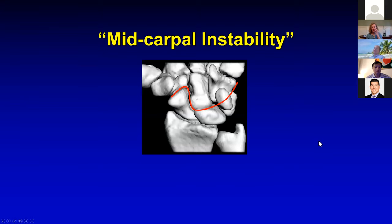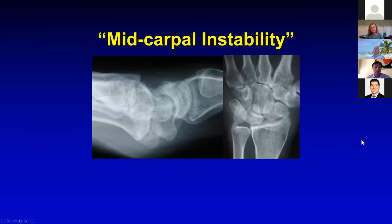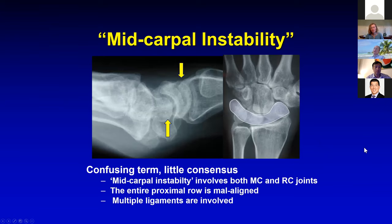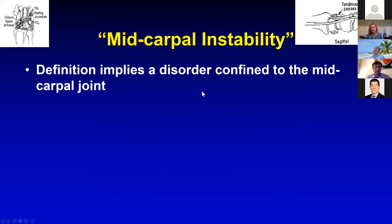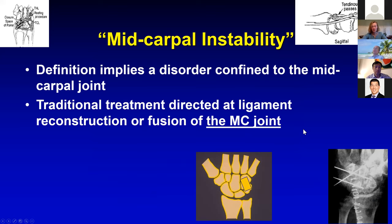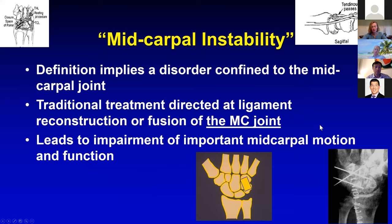Mid-carpal instability should refer only to a problem at the mid-carpal joint. Instead, it's a confusing term with little consensus. What we think of today as ulnar mid-carpal instability actually involves both the mid-carpal and the radiocarpal joints — the entire proximal row is malaligned, and multiple ligaments on both sides of the proximal carpal row are involved. We should really think of this instead as proximal carpal row instability.